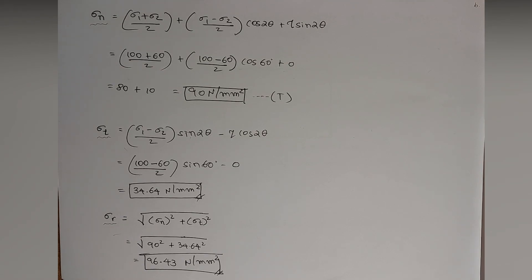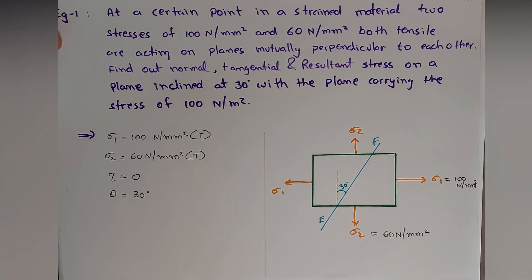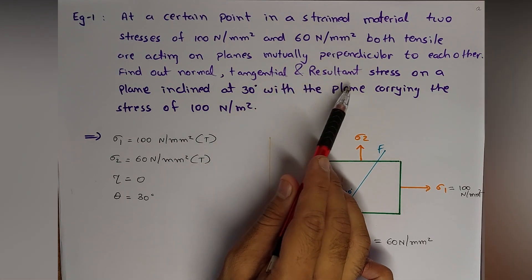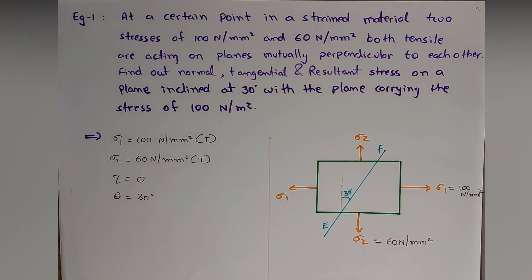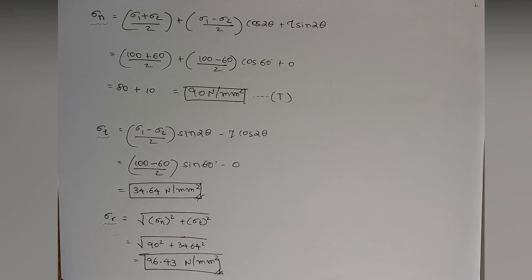You can try and solve it in a calculator to verify the answer. These are our required results: normal stress = 90 N/mm², tangential stress = 34.64 N/mm², and resultant stress = 96.43 N/mm². This is all about the seventh part of the topic Principal Stresses and Principal Planes. In the next lecture — lecture number eight — we'll start with example number two. Thank you for watching.